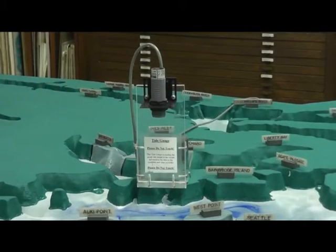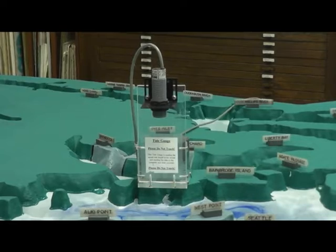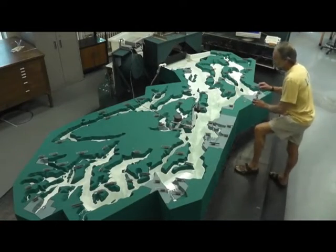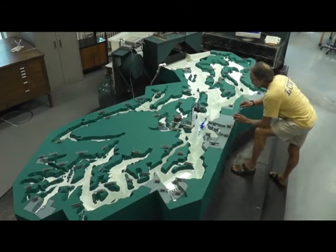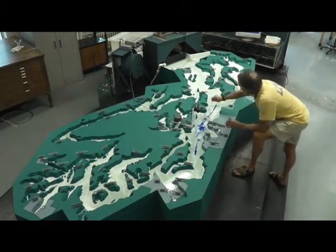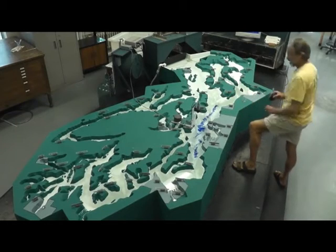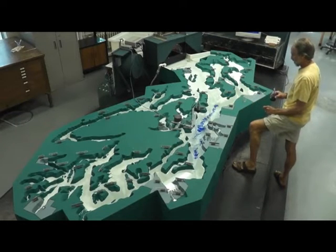In the Puget Sound model, the rise and fall of the tides is too small to be visible. But the currents created by the tides are very visible in the model and are the main reason for using it. We inject tracer dye into the model to observe how the water moves.